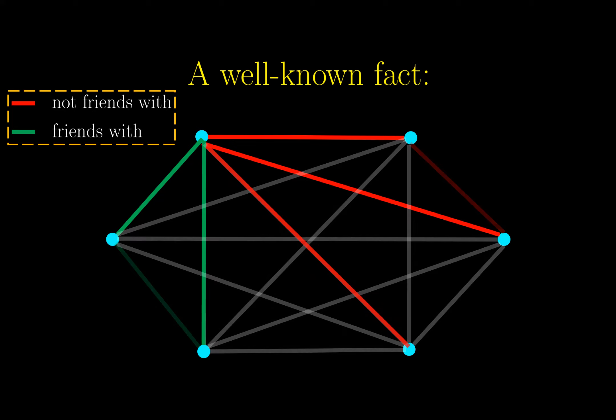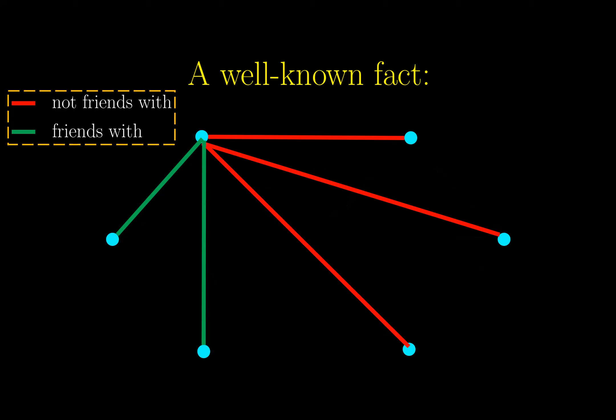With this setup, we can now present the proof for the fact. We only focus on one particular vertex, and all the 5 edges connected to that vertex. Among these 5 edges, since there are only 2 colors, one color must appear at least 3 times.